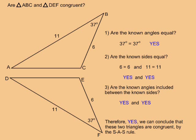Question 3: are the known angles included between the known sides? In both cases, yes, the 37 degree angle is included between the 6 unit and 11 unit sides. Therefore, yes, we can conclude that these two triangles are congruent by the SAS rule.